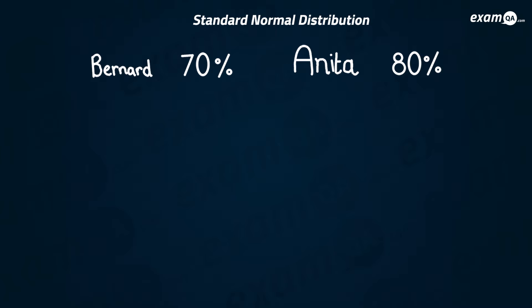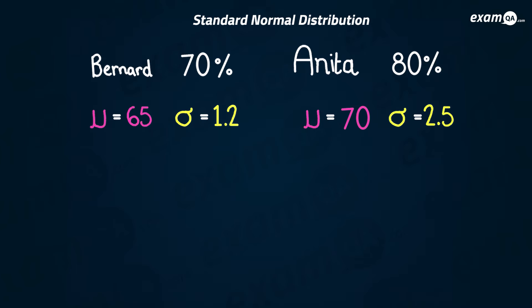In order to standardize them, you need the mean and the standard deviation for each. We've got the mean and the standard deviation for Bernard's class in his school, and we've got the mean and the standard deviation for Anita's class in her school. Now we've got all the information we need to standardize each of their scores and finally compare them.